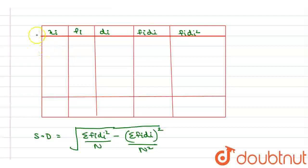Here in the question x_i is basically 2, 3, 4, 5, 6, 7 and f_i is the frequency which is 4, 9, 16, 14, 11 and 6.